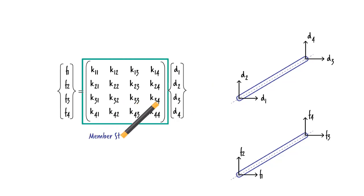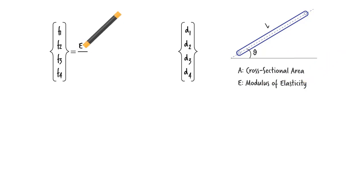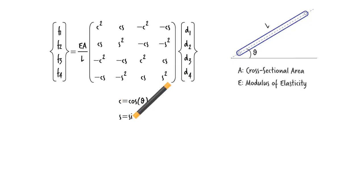This is called the member stiffness matrix. Before I explain how these coefficients are calculated, let me show you the results. For a member with a length L, a cross-sectional area A, and a modulus of elasticity E, the stiffness matrix becomes, where C represents cosine theta and S is sine theta.